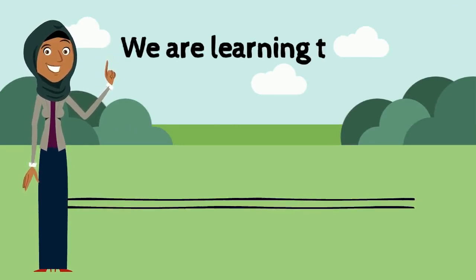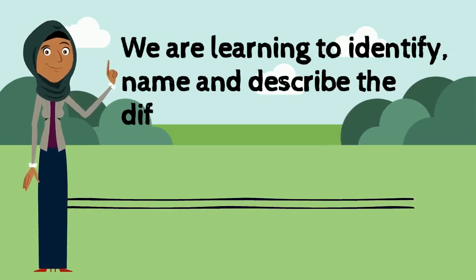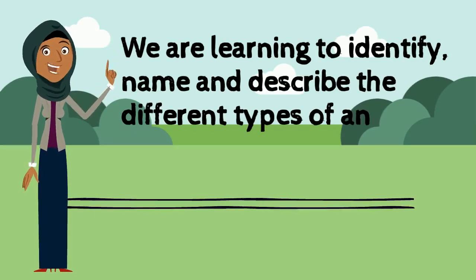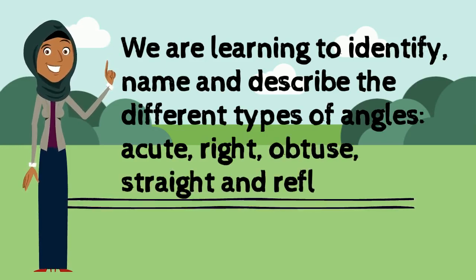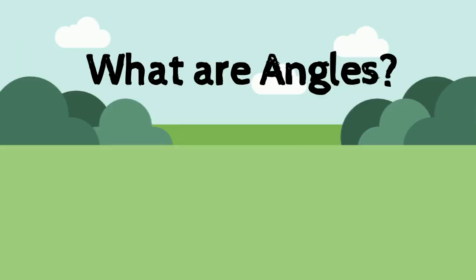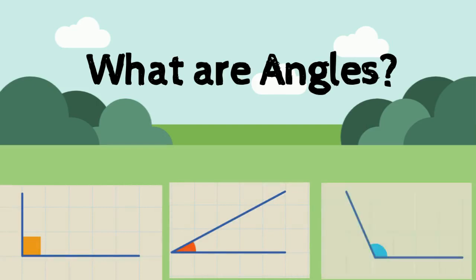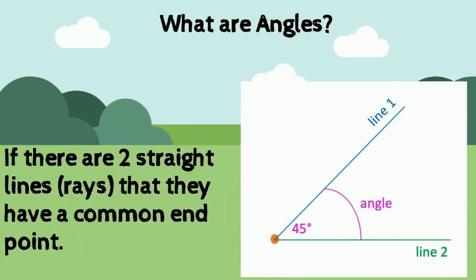In today's lesson we are learning to identify, name, and describe the different types of angles: acute, right, obtuse, straight, and reflex angles. What are angles? Well, angles are actually all around us. There are angles in most shapes and many of the objects that you see on a daily basis.